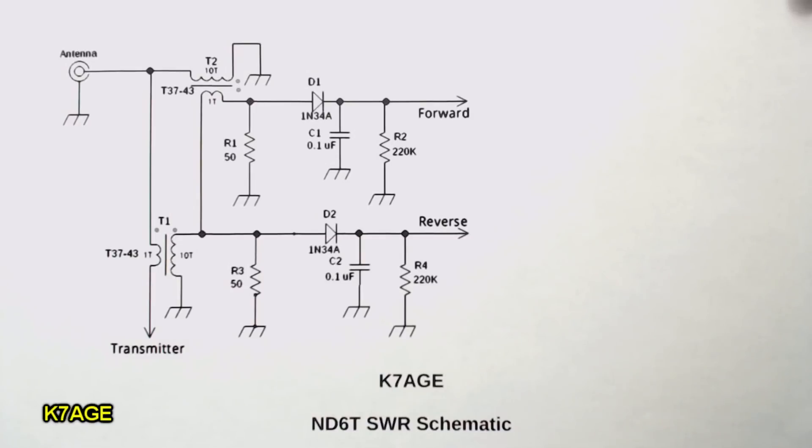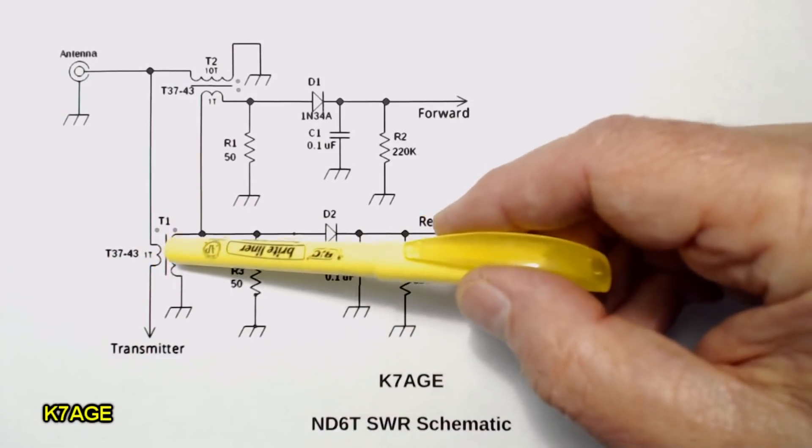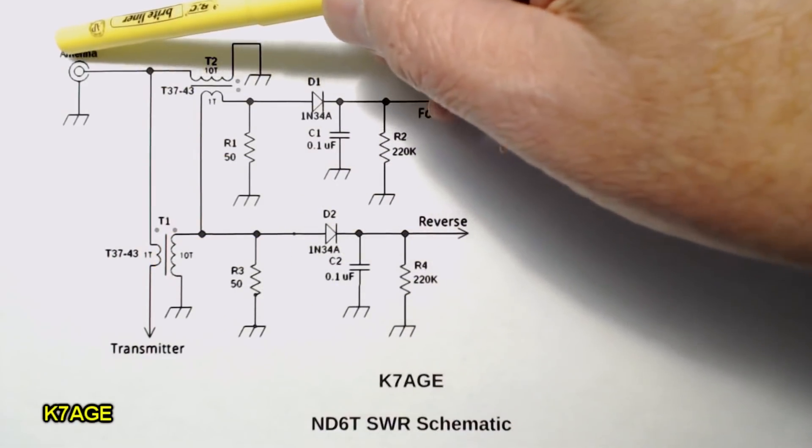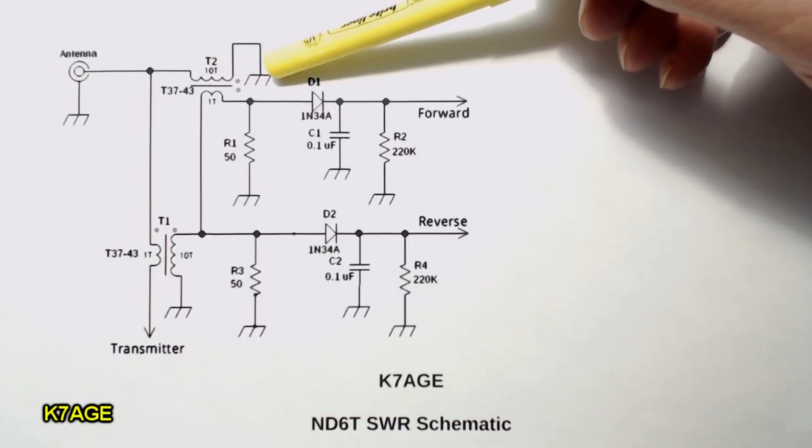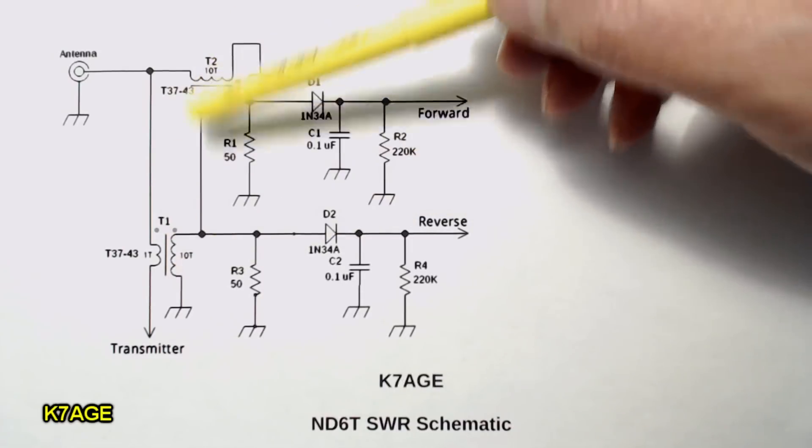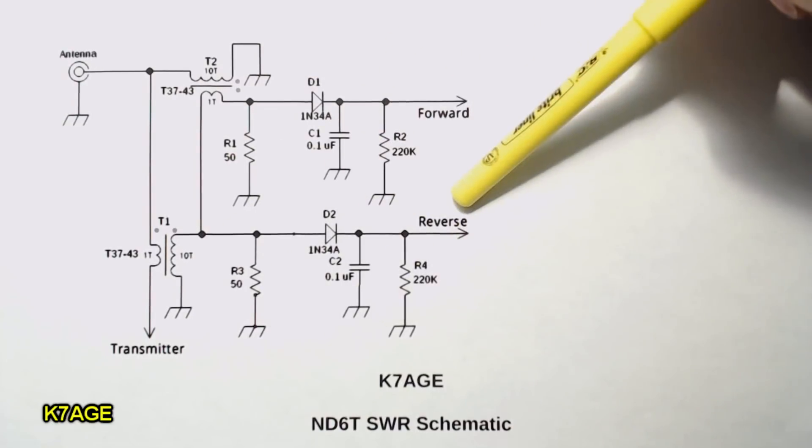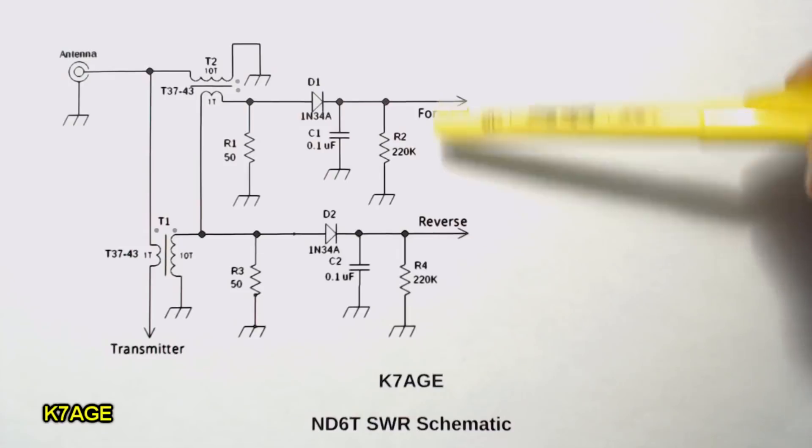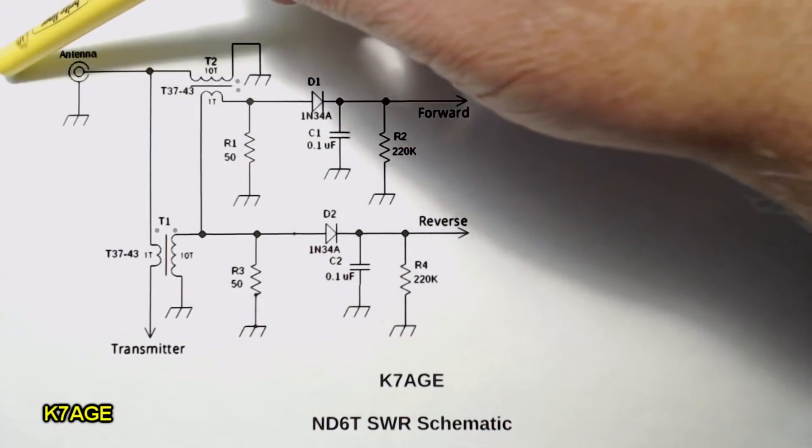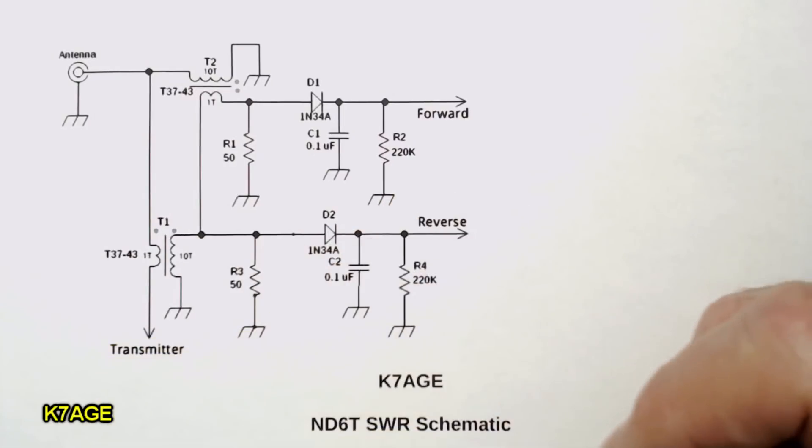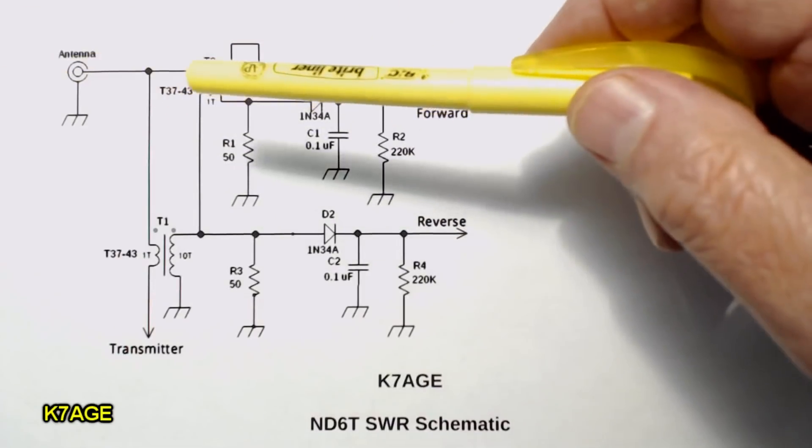So a review of the schematic. The RF power comes from the transmitter through the one side of this toroid and loops out to the antenna or the load. It's also coupled with the second toroid to ground and off the secondaries of both these toroids is the sensor for the forward and the sensor for the reverse. Now these are exactly the same and it doesn't really matter if the RF is going from the antenna to the transmitter or from the transmitter to the antenna.